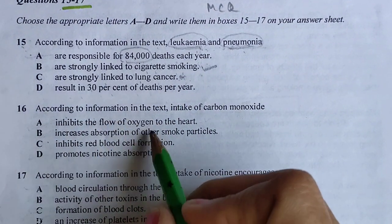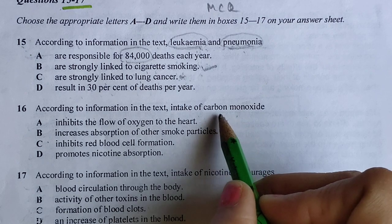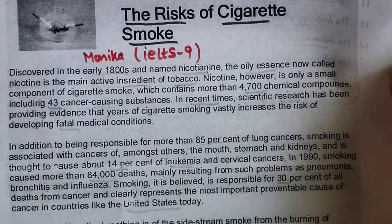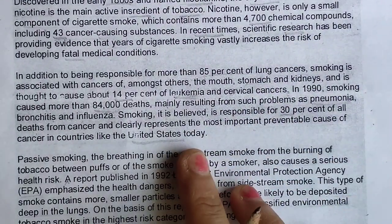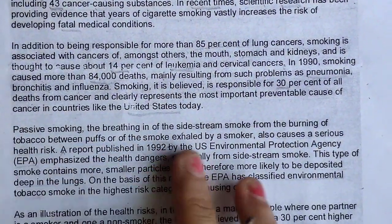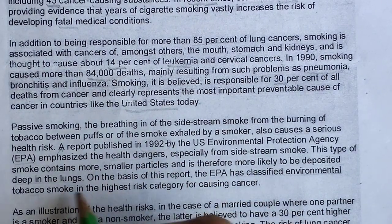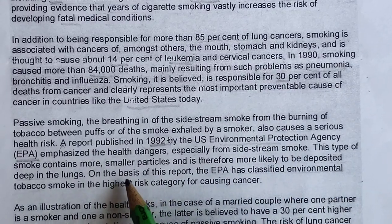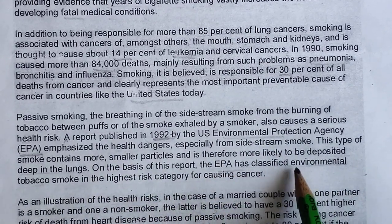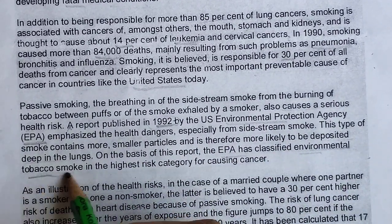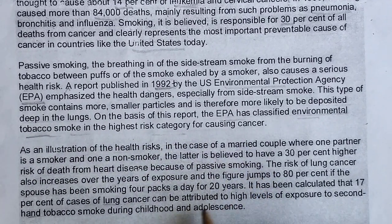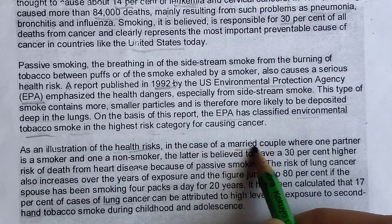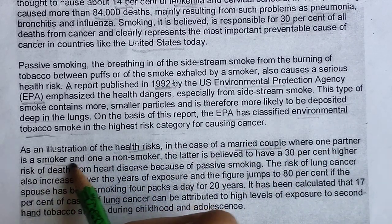According to the information in the text, the next question is about the intake of carbon monoxide. The important keyword is carbon monoxide. Let's find the word 'carbon' in the paragraph. We also see the EPA word: the 1992 US Environmental Protection Agency has classified environmental tobacco smoke in the highest risk category for causing cancer.